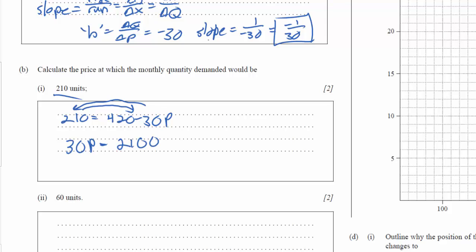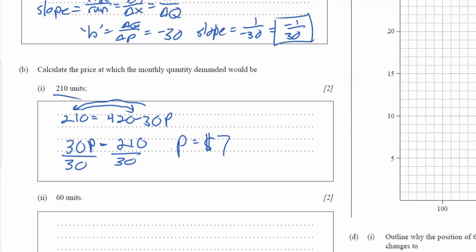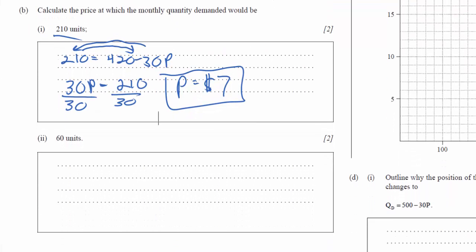420 minus 210 equals 210. And now I just solve for P. Divide both sides by 30. And the price at which the quantity demanded is 210 units is 210 divided by 30. An easy calculation we could do in our head, but we'll do it here. It gives us a price of $7. There's our answer. It's always a good idea to circle or outline your answers when doing these types of problems.